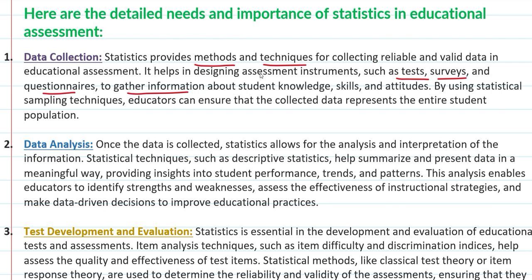बच्चों की skills के बारे में, उनके attitudes के बारे में। Example के तौर पर, statistical sampling techniques को use करके, educators ये ensure कर सकते हैं कि जो data collect किया गया है वो सारे बच्चों की population को दर्शा रहा है। तो पहला use यह है कि statistics हमारा जो बच्चों से related data है, उसको एकत्रित करने में मदद करता है।